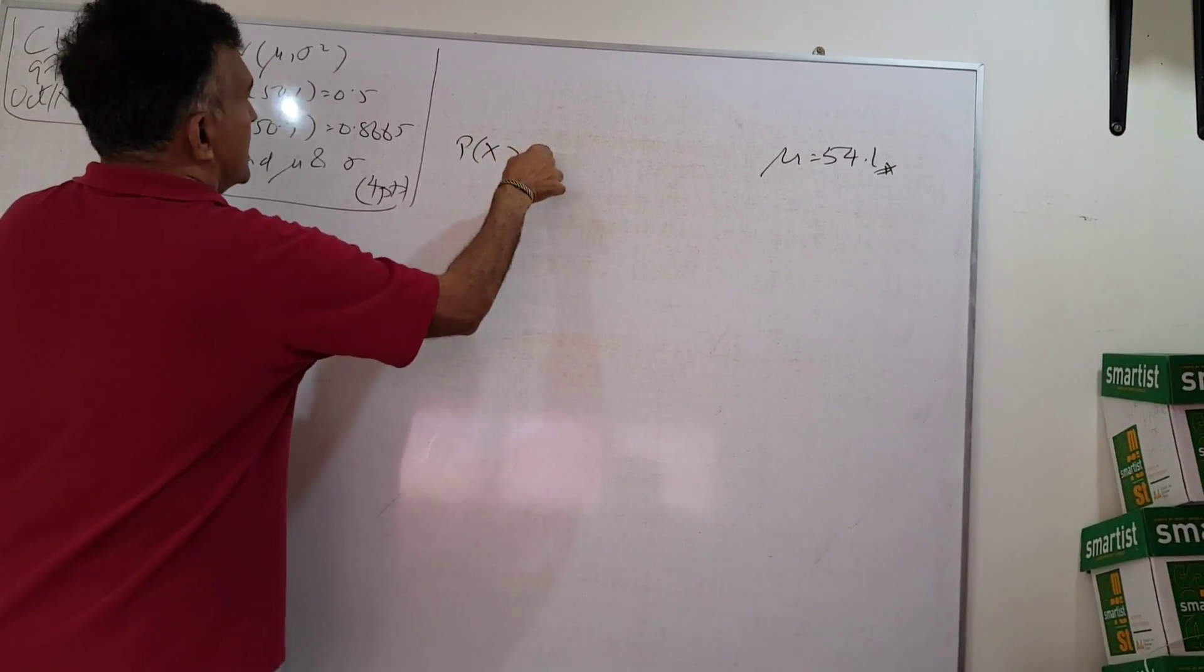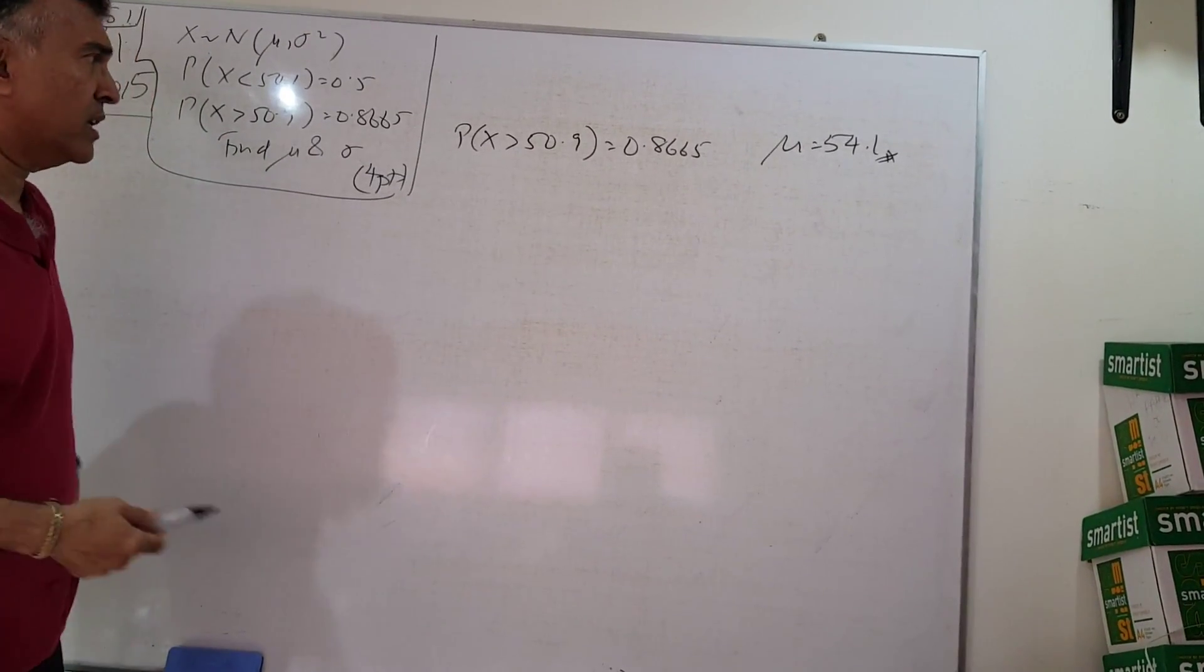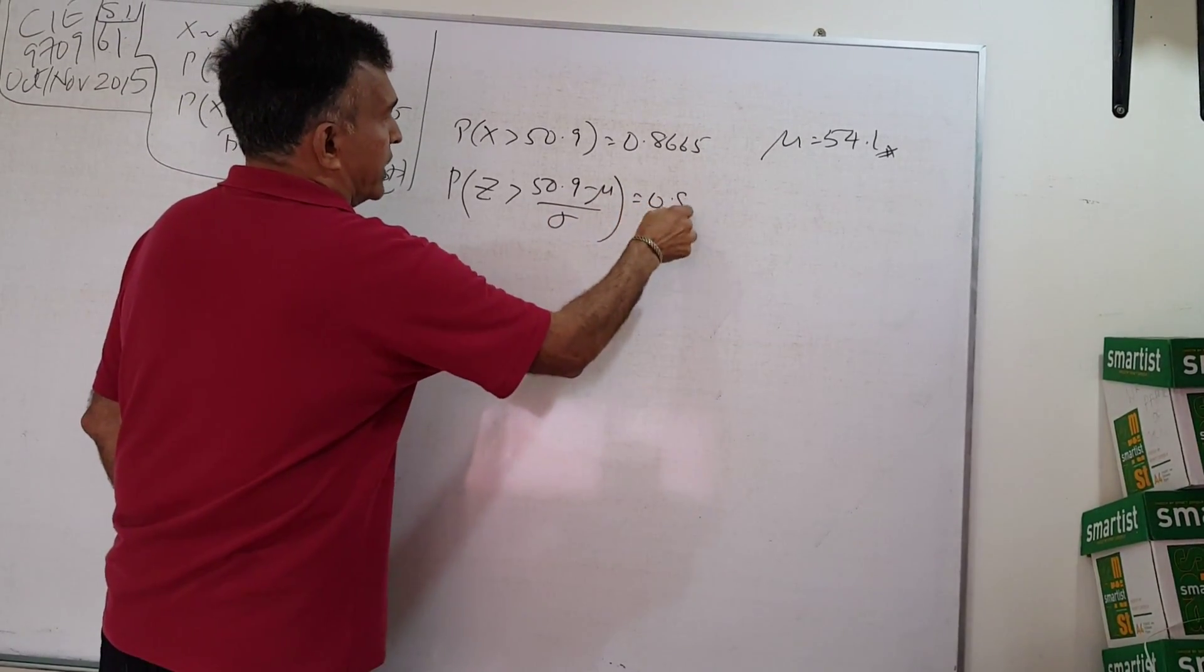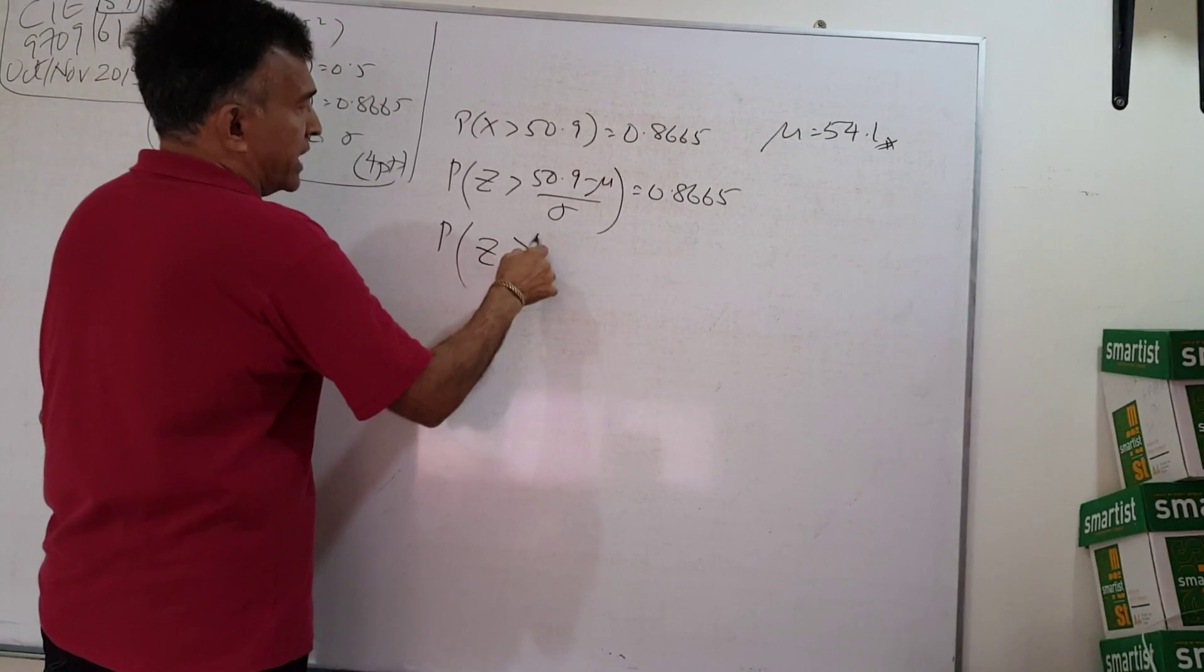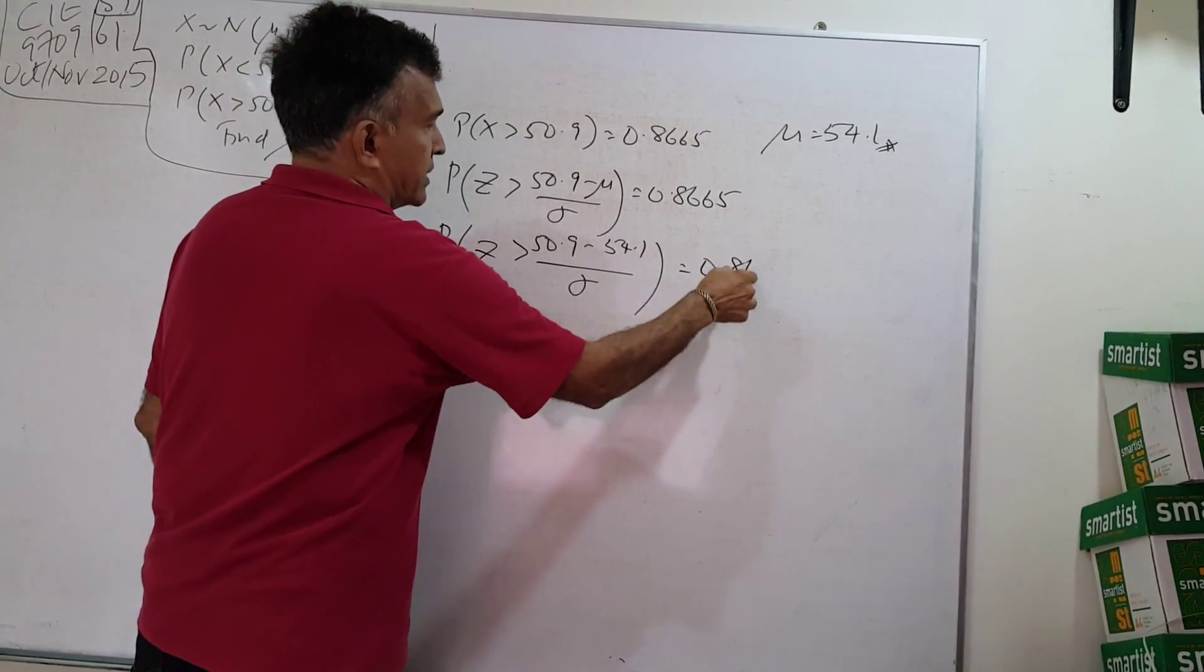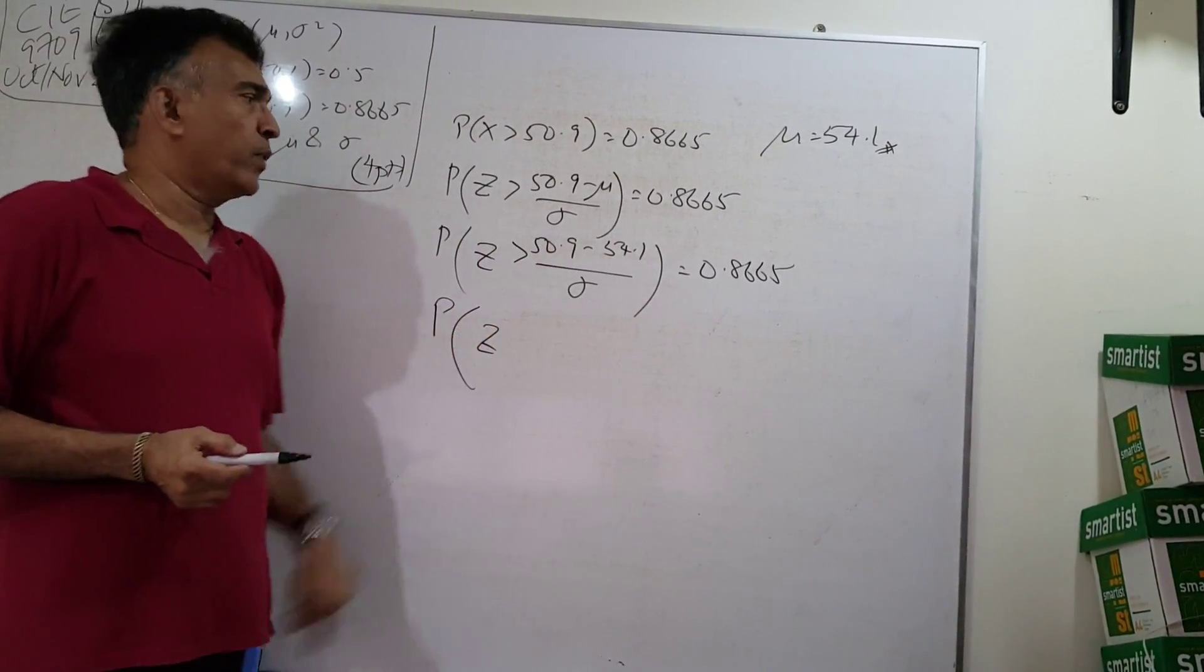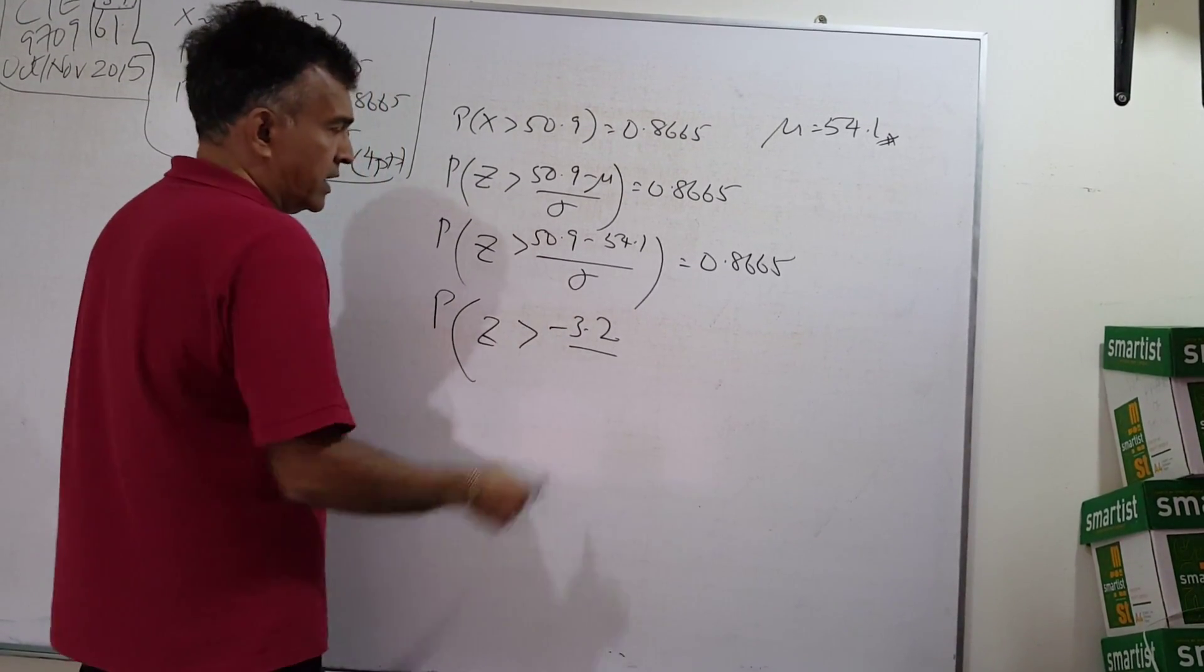Probability X bigger than 50.9 equals 0.8665. This is the probability statement. Transform your X to Z: Z bigger than 50.9 minus μ over σ, which is 50.9 minus 54.1 over σ, equals 0.8665. We know the value of μ is 54.1, so 50.9 minus 54.1, you're going to get negative 3.2 over σ.